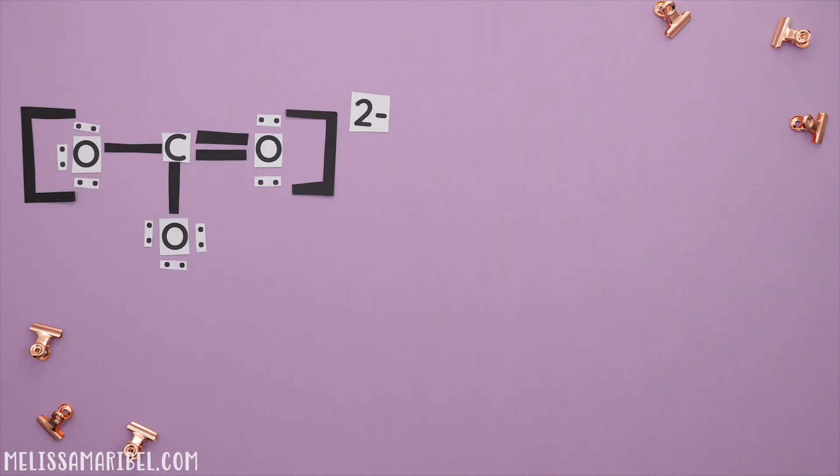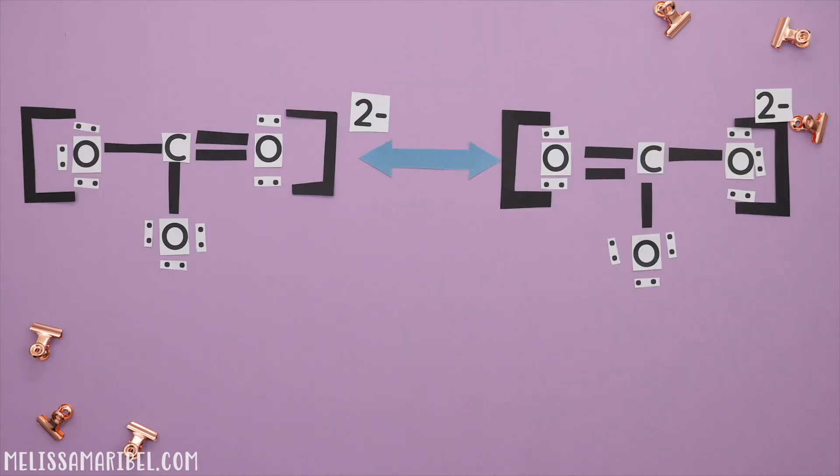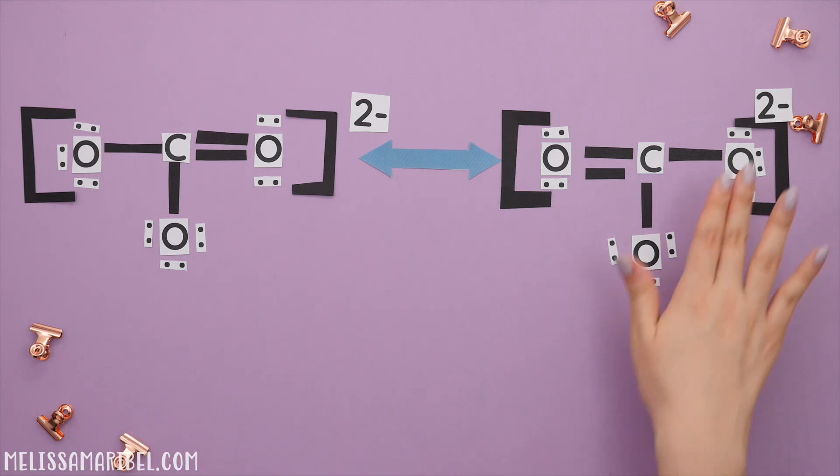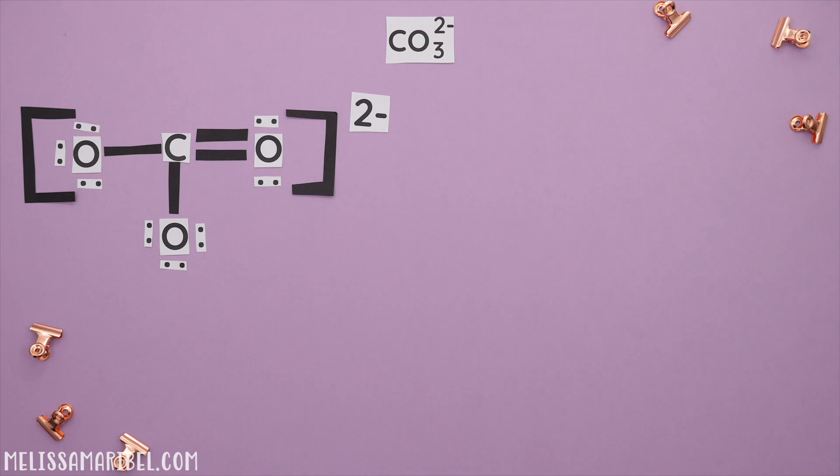Next is resonance. When Lewis structures can be drawn multiple ways, this is known as resonance. Here's the first Lewis structure for a carbonate ion. To find the next structure, we can move the double bond to a different oxygen. What we are doing is moving the electrons to this oxygen and our double bond is breaking and reforming to a different oxygen.